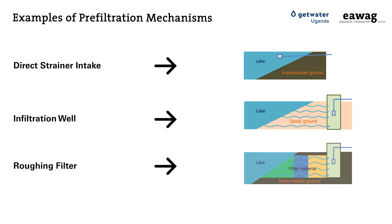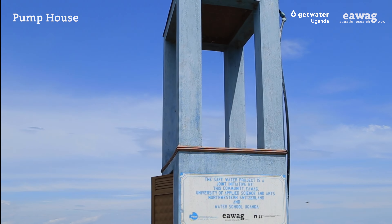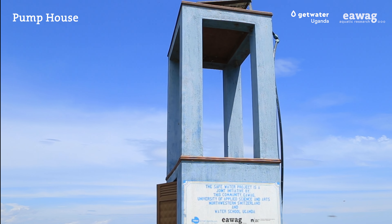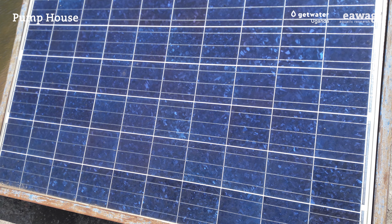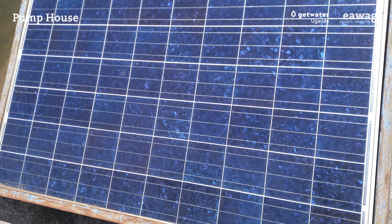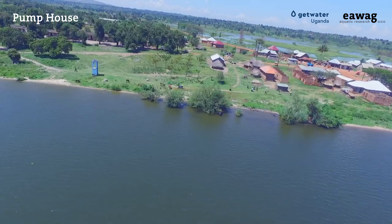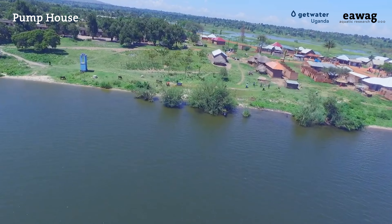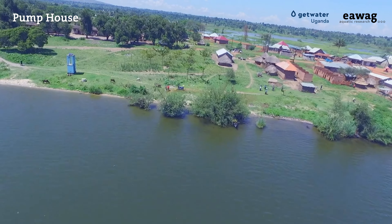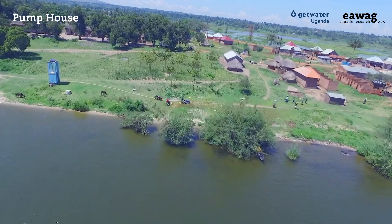Other options include infiltration wells on sandy shores, or roughing filters in areas where the ground is not permeable enough for riverbank infiltration. The pump uses solar power to convey the water through a pipe to the treatment site with a GDM filter.